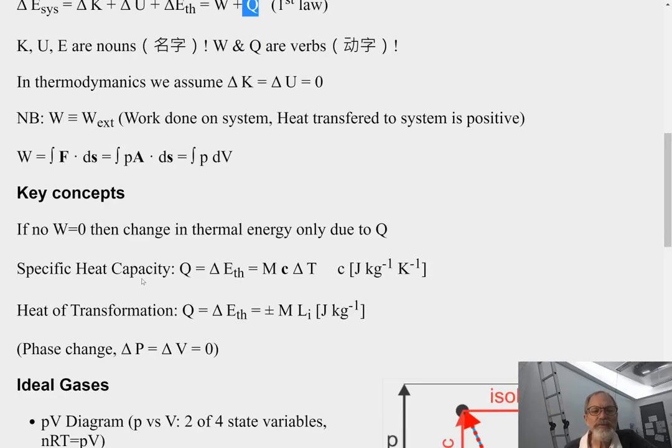So, from this, we can then say, let's define some terms. First of all, specific heat capacity. Q equals delta E_th equals M c delta T. So, if I have a material, the mass of the material times the specific constant for that material times the change in temperature will show how much, helps us to relate how much a temperature change relates to Q and which relates to a change in thermal energy.